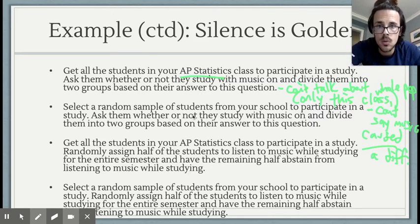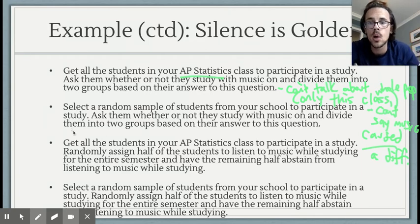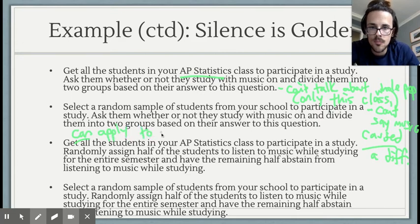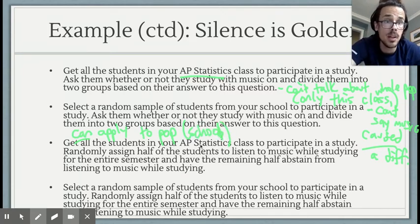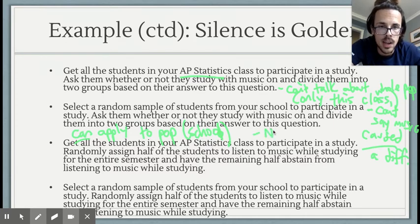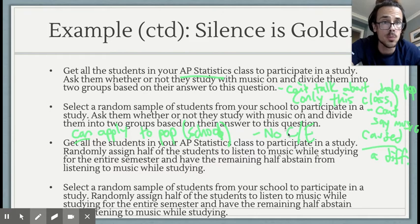Design 2: We randomly sample from our school and then ask if they listen to music or not, breaking them into groups. Since I did randomly sample, I can apply results to the population of my school — even without talking to every single person — but I can't apply beyond my school. There would be no cause and effect, since I just let students establish their own group, same as the first design.